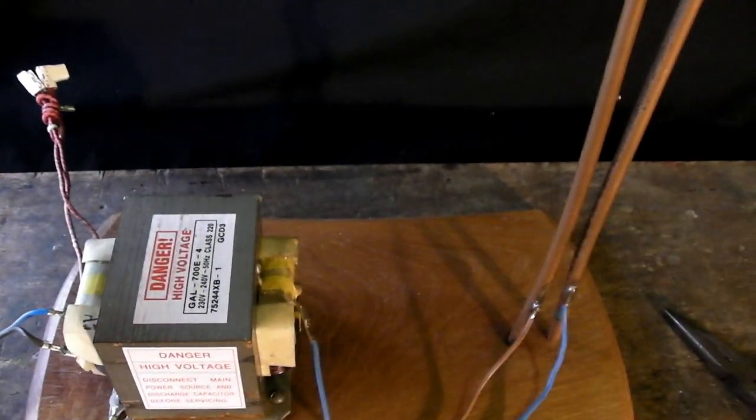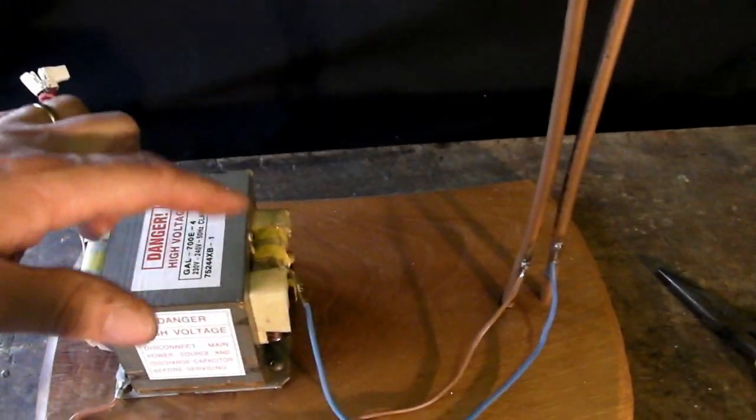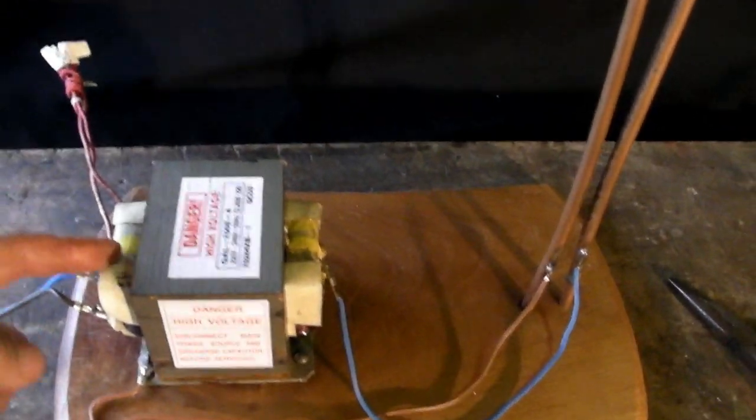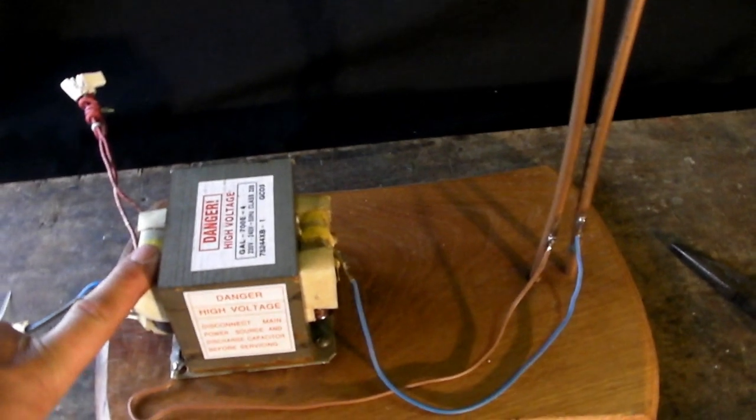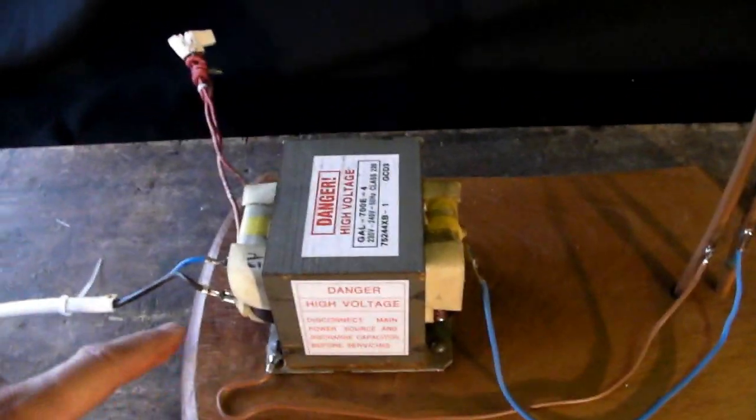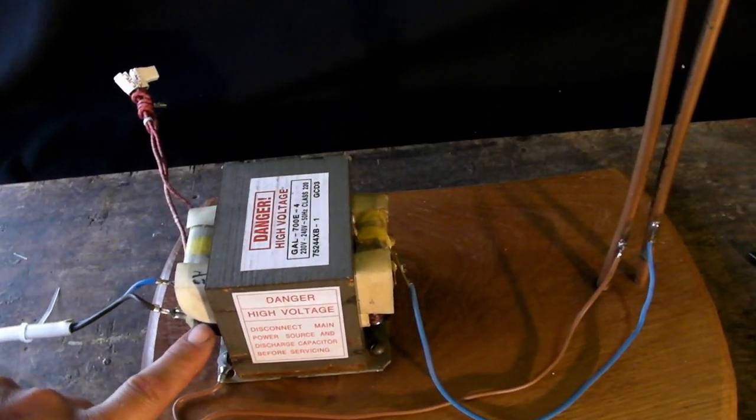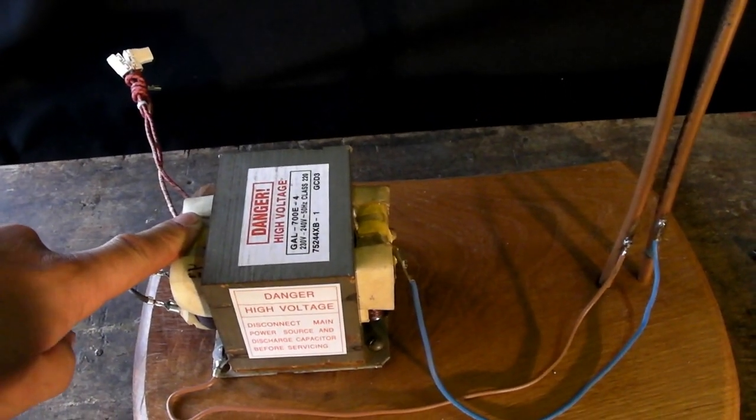And the voltage that comes out is dependent on the number of turns of the coil. So if you've got more turns in your secondary coil than the primary coil you'll get a higher voltage. If you've got less turns you'll get a lower voltage. So this coil, 230 or so volts going in, a couple of thousand volts coming out. And that's exactly what we want.